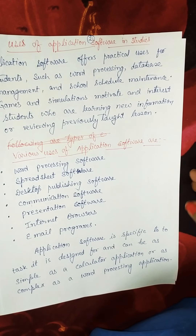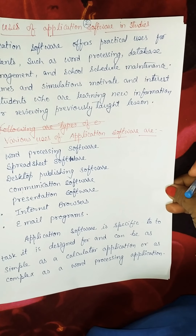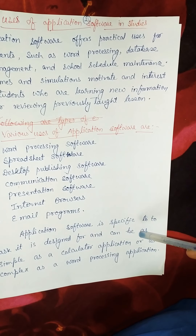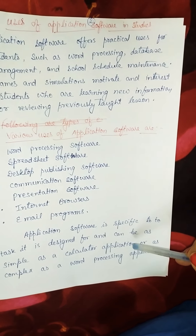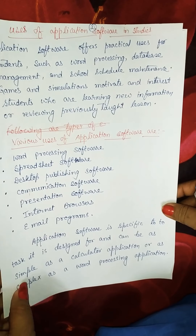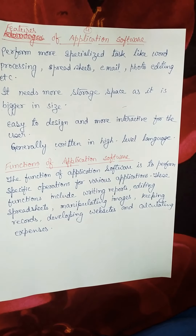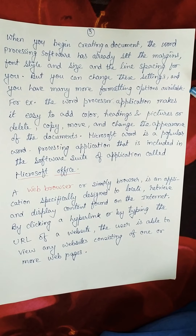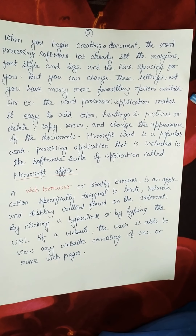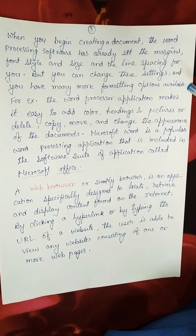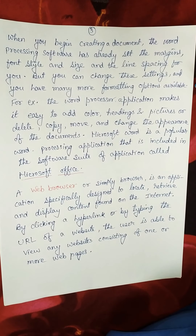Application software is specific to a task it is designed for, and can be as simple as a calculator application or as complex as a word processing application. When you begin creating a document, the word processing software has already set the margins, font style, size, and line spacing for you.